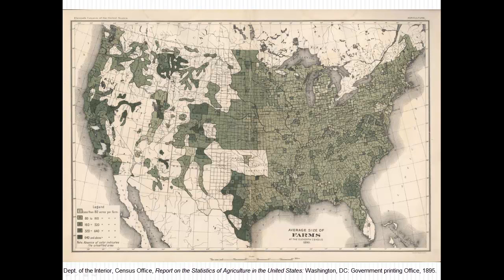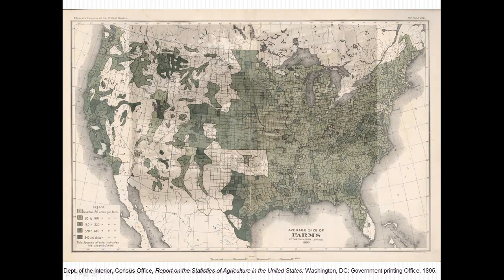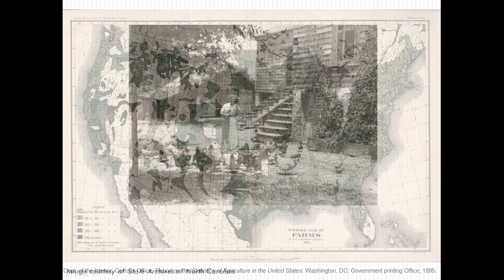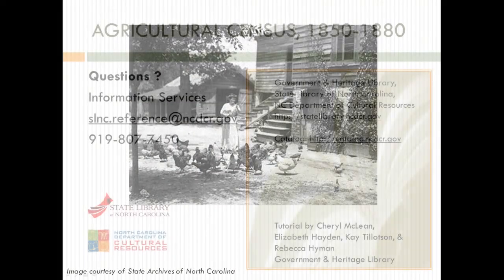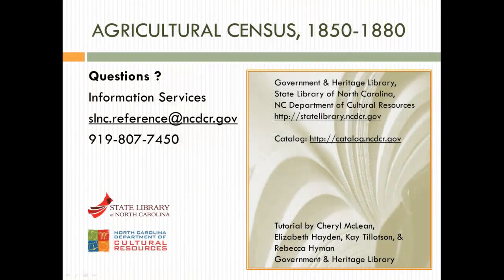Nurseries and orchards were considered farms, but the family's vegetable garden, cabbage, and potato patches were not. Not all states have surviving agricultural schedules for the 19th century. However, to get a more complete picture of your ancestors' lives, consider studying the agricultural schedules that do exist.